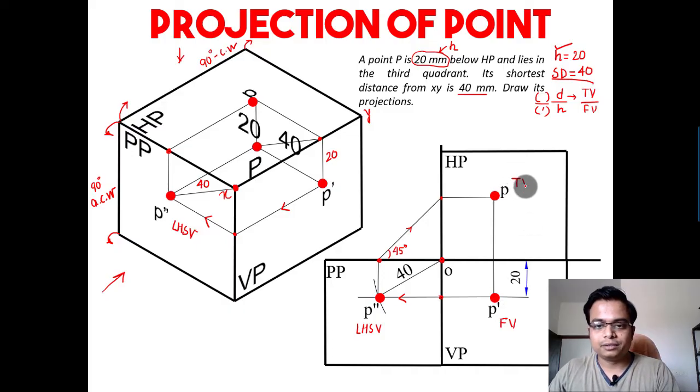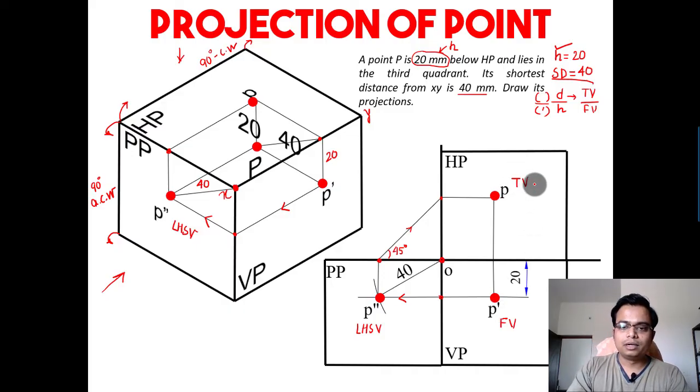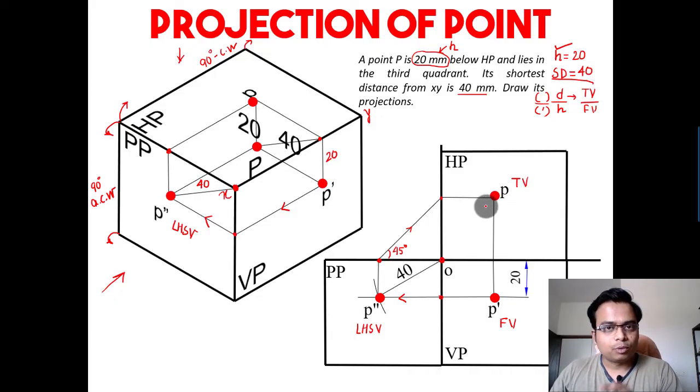Now you can also go ahead and check whether the projection that you have made is absolutely correct or not. So what you can do is you can keep a scale over here and try to measure this. Try to measure this - this is H, and this has got to be D.